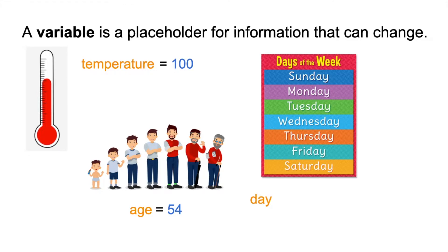The days of the week is also a variable. Today it might be Monday, tomorrow it's going to be Tuesday, and the next day it might be Wednesday. The day of the week is not always the same every single day — it changes from day to day. So day is a variable because it changes.